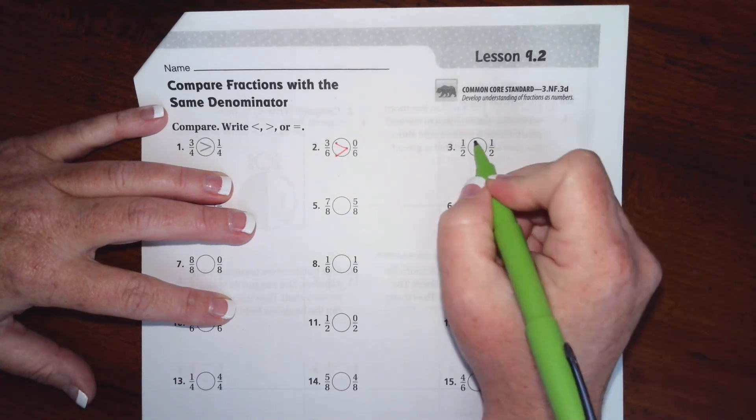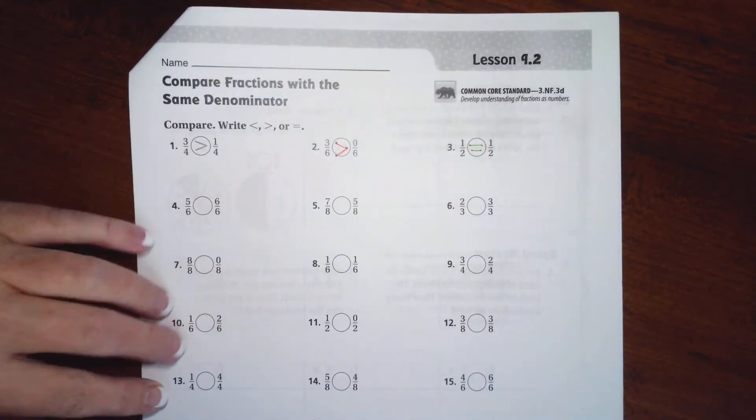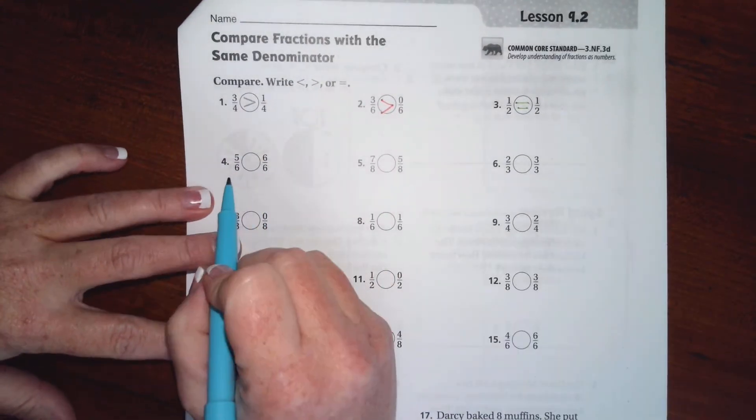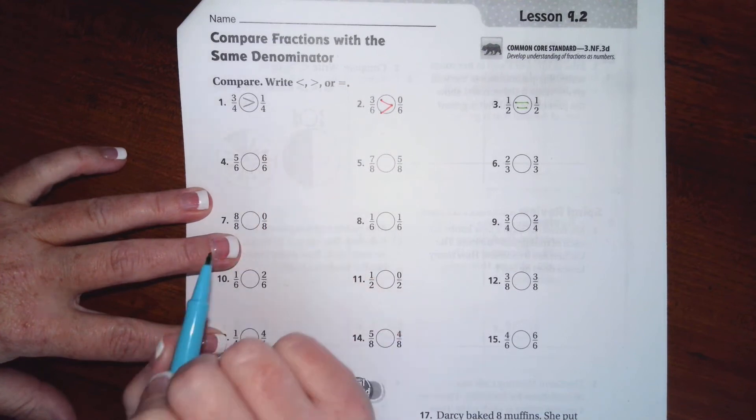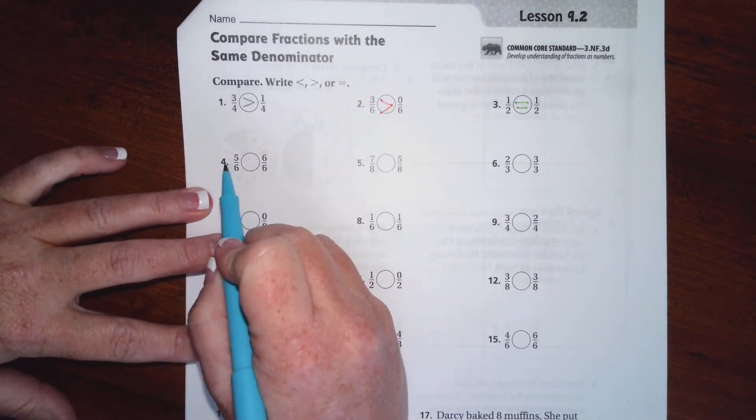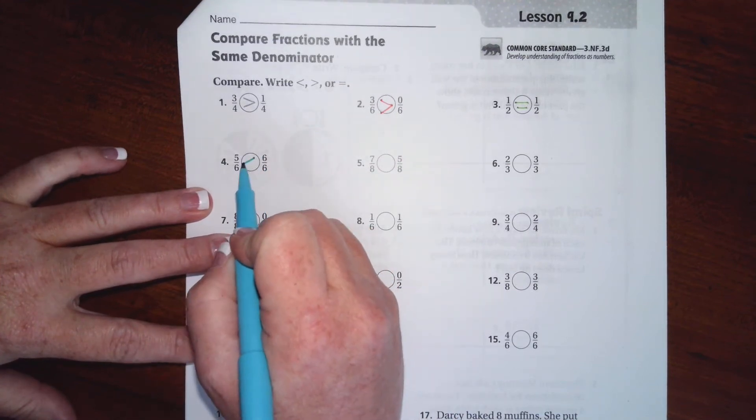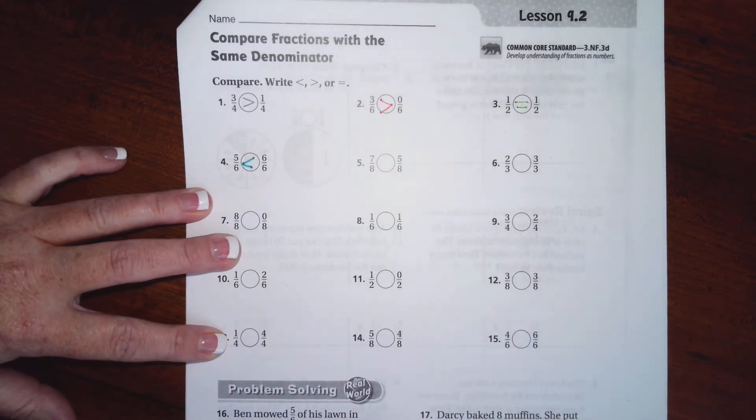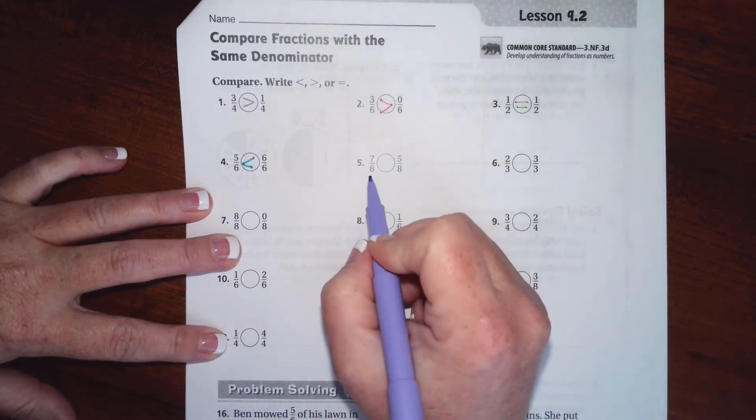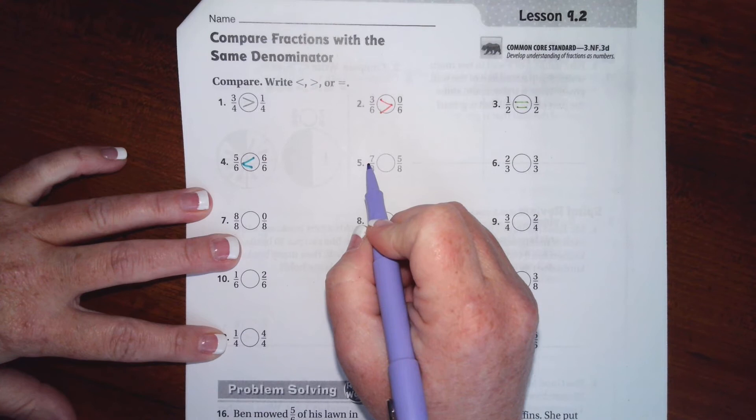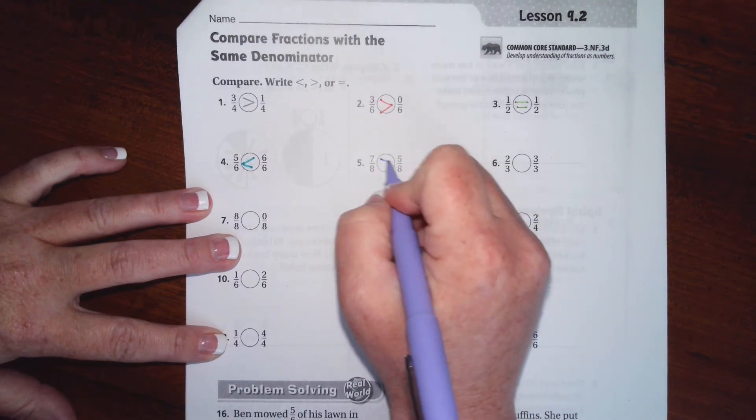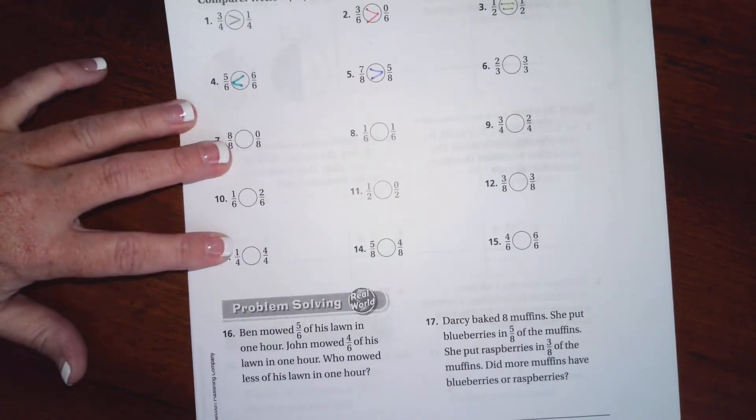One half and one half, well that's identical, equal. We have five sixths and we have six sixths. Bottoms are the same, looking at the top, the one with the six is bigger. Okay, same denominator, top is seven and five. Seven is bigger. There we go.